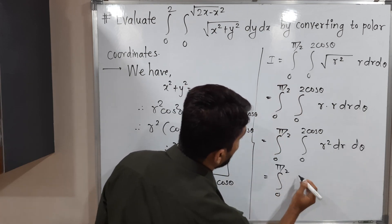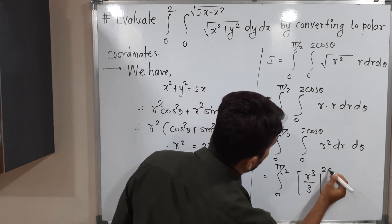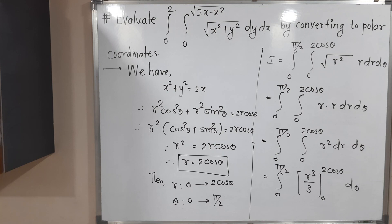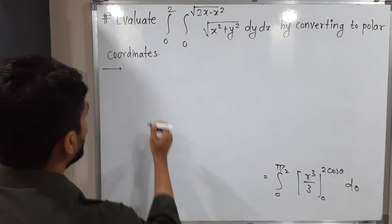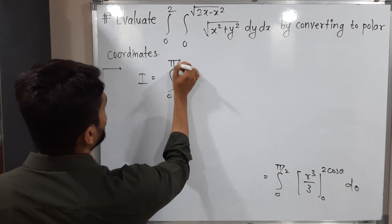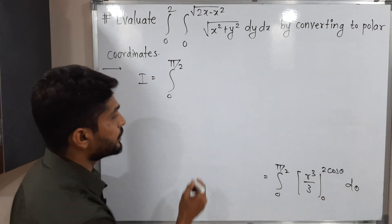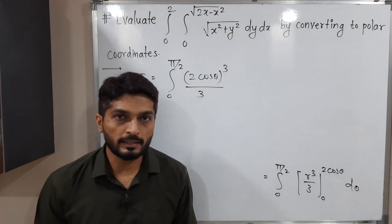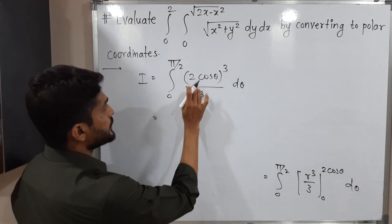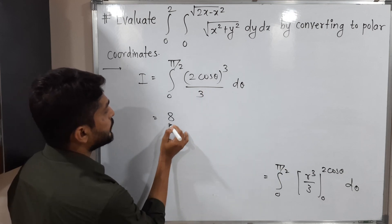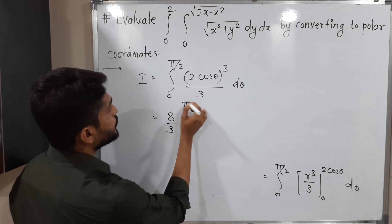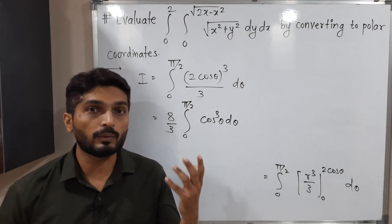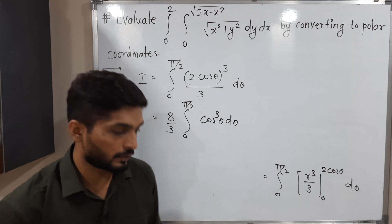Integrating r² with respect to r gives r³/3. Evaluating from 0 to 2cosθ: putting the upper limit gives (2cosθ)³/3 = 8cos³θ/3. So the integral becomes (8/3) ∫₀^(π/2) cos³θ dθ. Since cos has power 3, this is difficult to solve directly, but we can use the Beta-Gamma function.